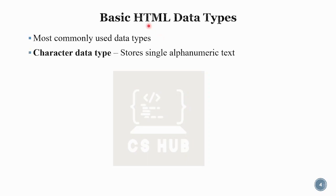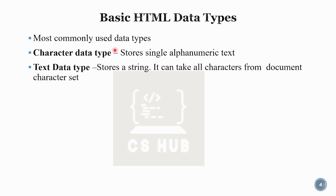The character data type is a single alphanumeric text. If we use a normal char, we use a single alphanumeric text — that is the character data type. Then the text data type is a string. It stores strings and can take all characters from the document character set.